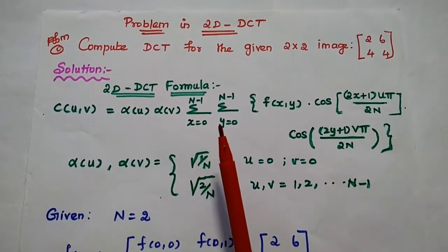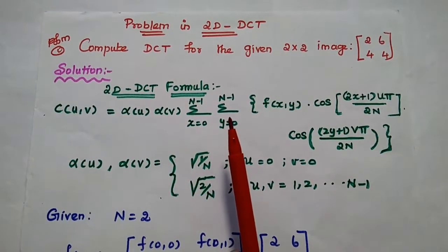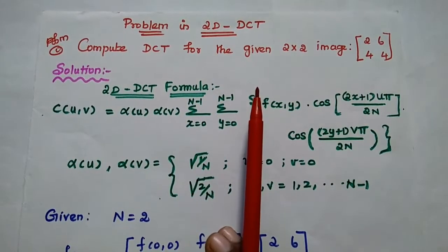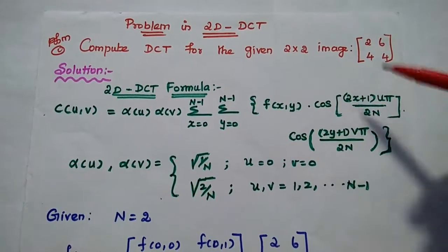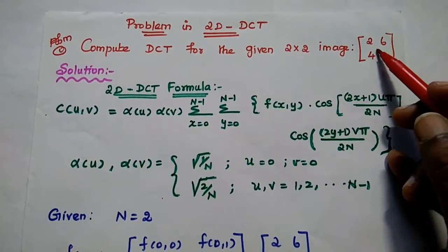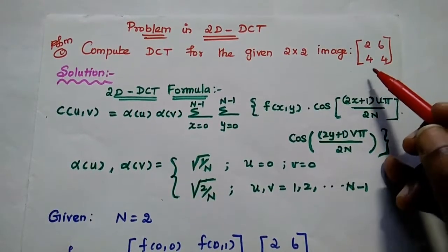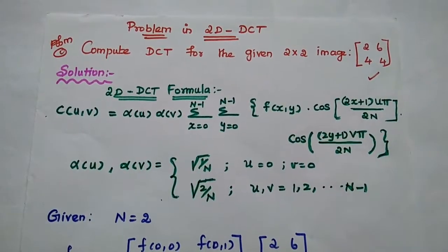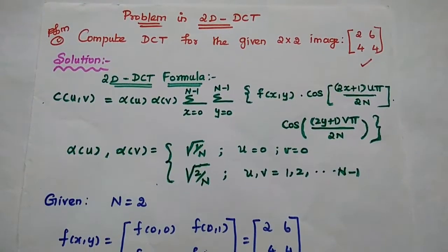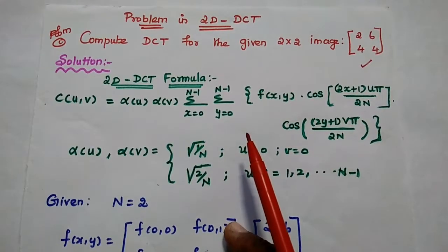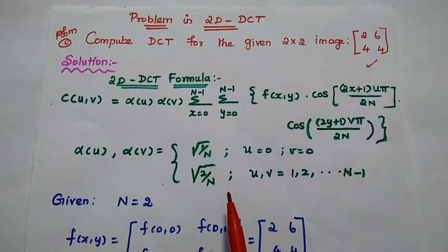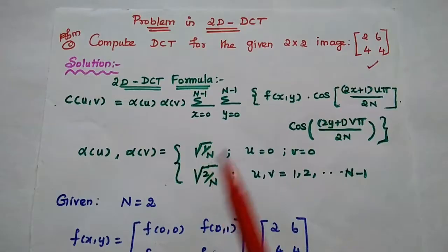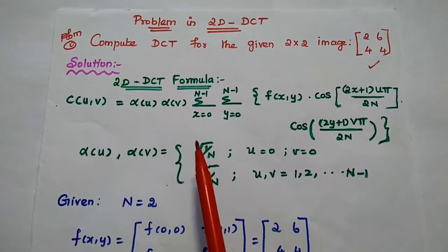Dear students, we are going to solve one problem in two-dimensional discrete cosine transform. Compute DCT for the given 2x2 image data: 2, 6, 4, 4. We are going to find the forward discrete cosine transform for this image data. DCT can be obtained using two methods: the formula method and the kernel method. In this video, we are going to solve using both methods. First, we will use the 2D DCT formula method.